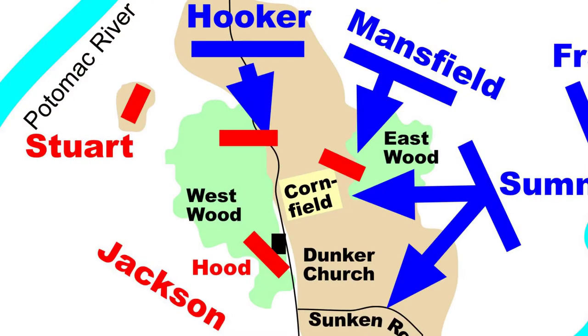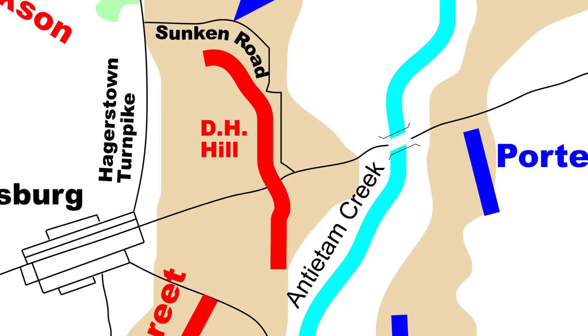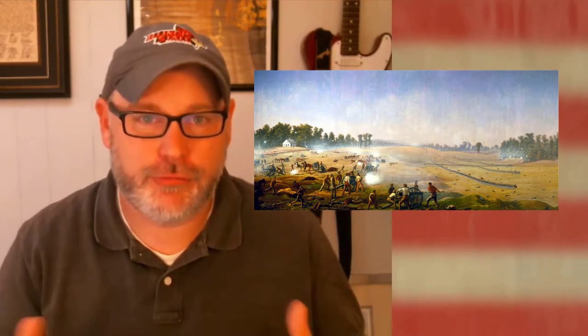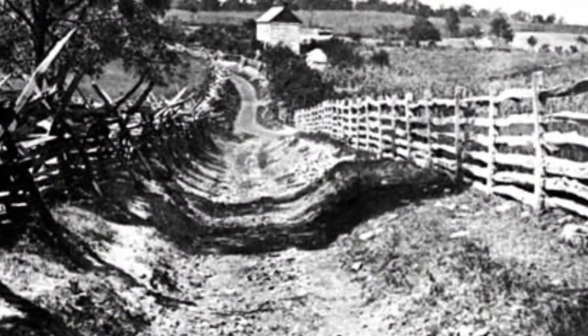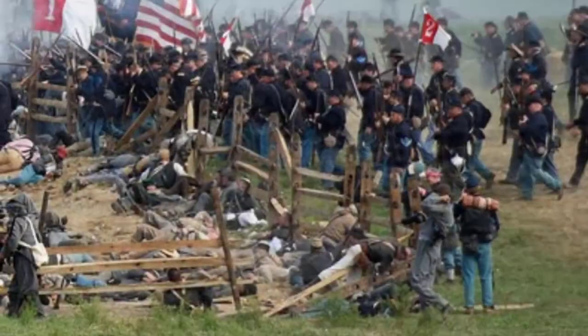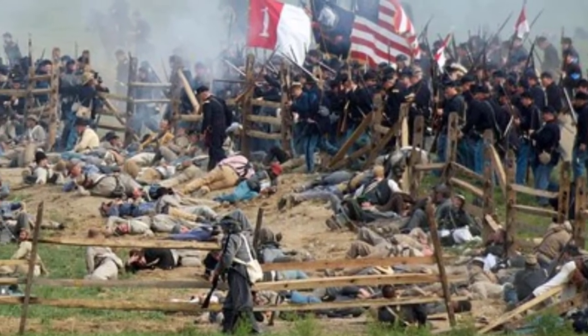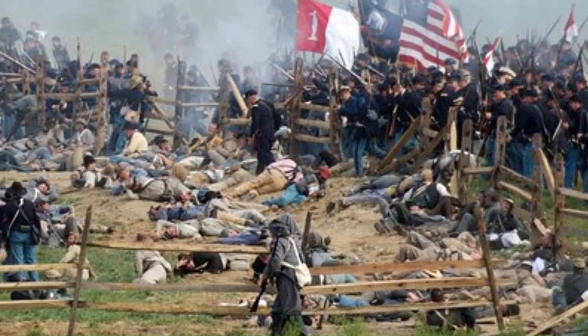In the middle of the battle, the Union attempted to break the center of the Confederate line. Union troops marched across an open field toward Confederates entrenched along a sunken road that would become known as Bloody Lane. The Union did break through, but McClellan refused to send in reinforcements to fully exploit and break the Confederate line.